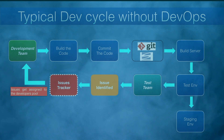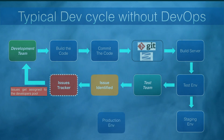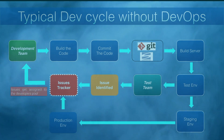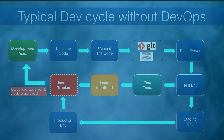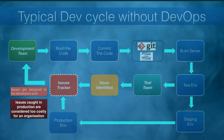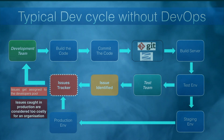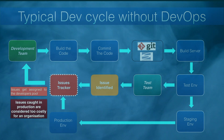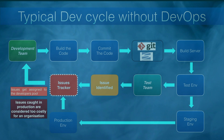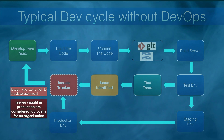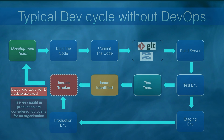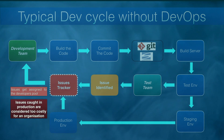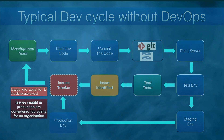Once this fixes cycle completes, the build is given to the operation team to deploy on the staging server and production server respectively. Up to here, everything looks fine. The problem occurs when issues are caught in the production environment. Many times it becomes tedious for the operation team to handle the issue and they need help from the development team to mitigate the issue on priority. This may lead to serious problems. How DevOps can solve such intermittent issues, we will see in our upcoming slides.